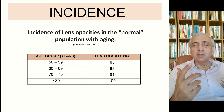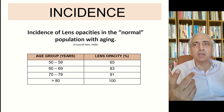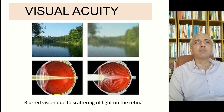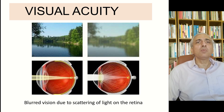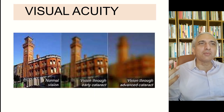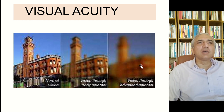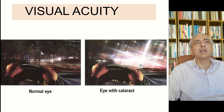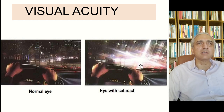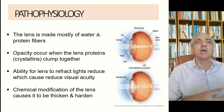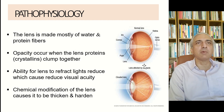Not every patient with age-related cataract needs surgery — it depends on assessment before surgery. Cataract causes visual acuity to become blurred due to scattering of light on the retina. You can see normal vision compared to vision through an early cataract and through a very advanced cataract. Another important effect is glare — the patient reports seeing streaks of light around lights while driving, which is typically caused by posterior subcapsular cataract.